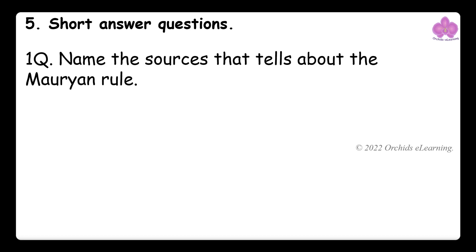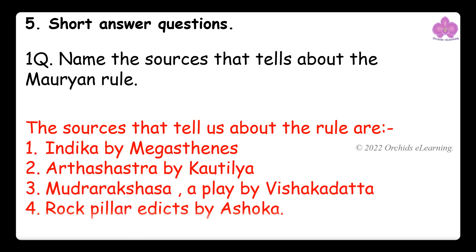Short answer questions: Name the sources that tell about the Mauryan rule. The sources that tell us about the rule are: Indica by Megasthenes, Arthashastra by Kautilya, Mudrarakshasa — a play by Vishakhadatta — and rock and pillar edicts by Ashoka.